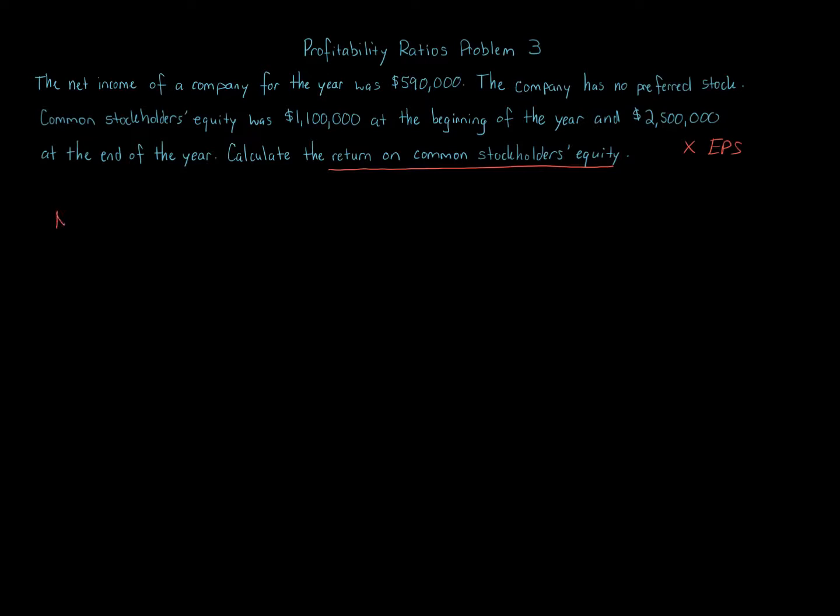The formula, we take net income minus preferred dividends. The reason why this is specific to common stock is we have to subtract away the preferred dividends because that has no effect on the common stockholders. So far this looks exactly like EPS and you're right, net income minus preferred dividends, identical numerator to the earnings per share calculation.